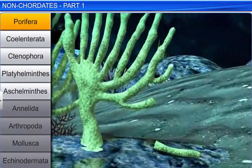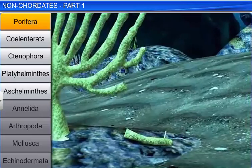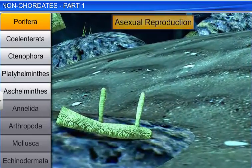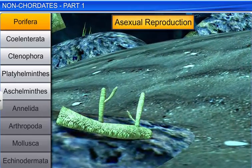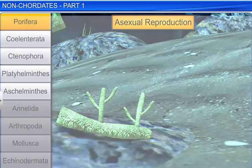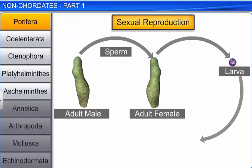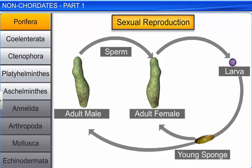Sponges are hermaphrodite, and they reproduce asexually by fragmentation, as well as sexually by formation of gametes. In sponges, fertilization is internal, with indirect development.